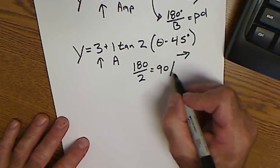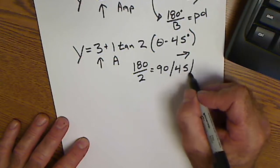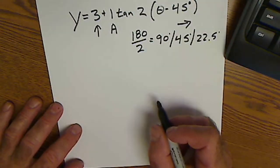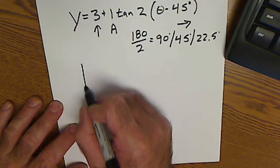That's a full cycle. Half cycle in 45, quarter cycle in 22.5 degrees. I mark up my equation first, then label my axes.